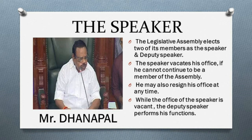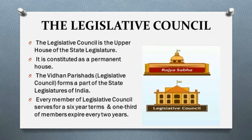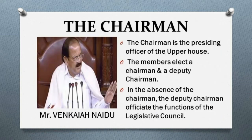The legislative council is the upper house of the state legislature and is constituted as a permanent house (Vidhan Parishad). Every member serves a six-year term and one-third of members retire every two years. Members must be citizens of India, not under 30 years of age, mentally sound, not bankrupt, and registered in the voters list of the state. The chairman is the presiding officer, elected by members along with a deputy chairman.